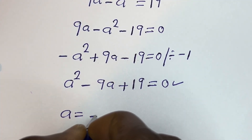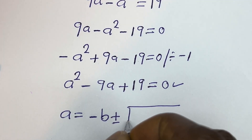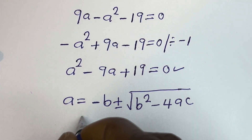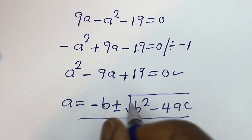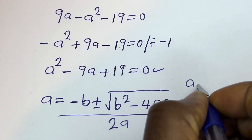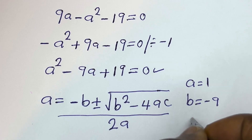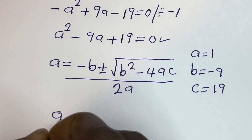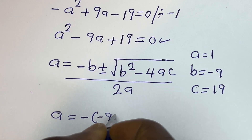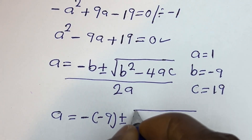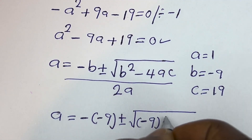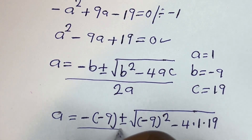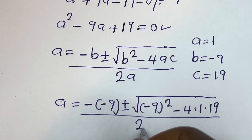The quadratic formula is: x equals minus b, plus or minus the square root of b squared minus 4ac, all divided by 2a. From our equation, A is equal to 1, B is equal to minus 9, and C is equal to 19. Substituting: a equals minus (minus 9), plus or minus the square root of (minus 9) squared minus 4 times 1 times 19, everything divided by 2 times 1.